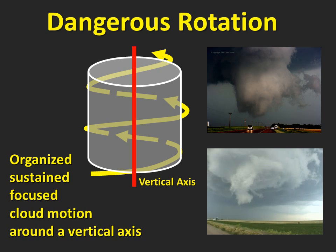In this diagram, the cylinder represents the cloud we're watching. Rotation would be cloud motion like a merry-go-round in a circle around the imaginary pole running through the middle of the cloud. This motion would be focused around this axis and persistent for several minutes. If you see clouds moving but they're not focused around a vertical axis like this, then it's not rotation.